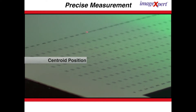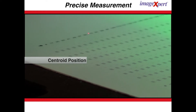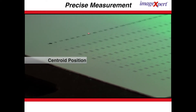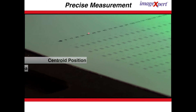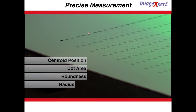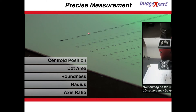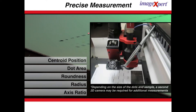Developers also have their choice of a wide range of additional measurements including dot area, roundness, radius, axis ratio, and more. Depending on the size of the dots and sample, a second 2D camera may be required for additional measurements.